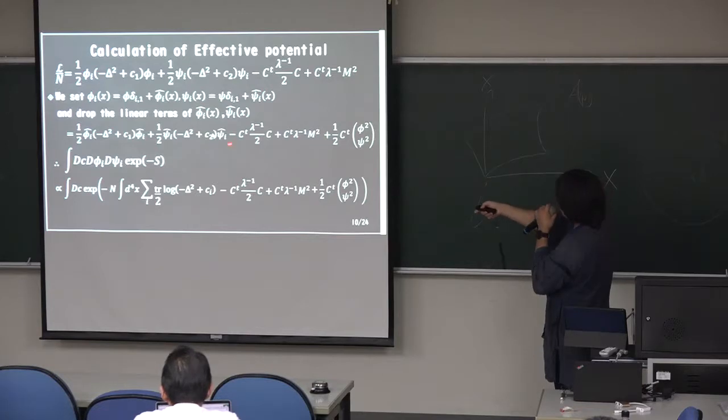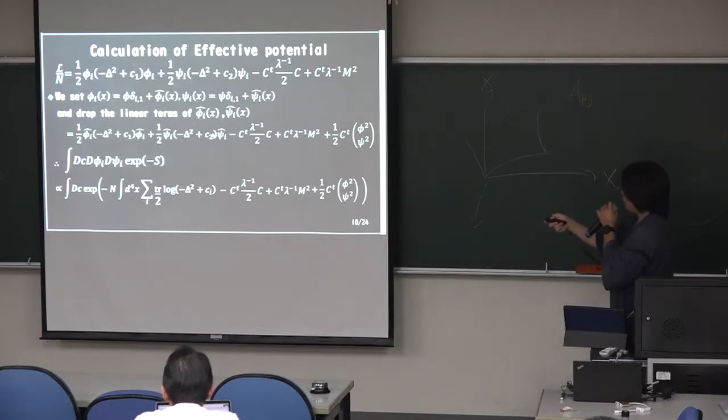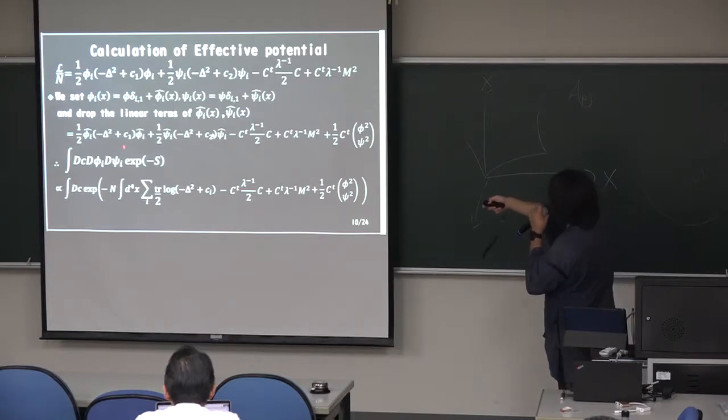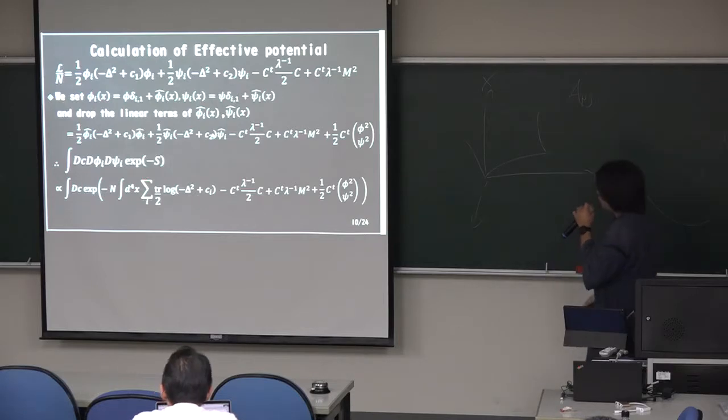And we substitute it, plug in this form, this expression, and the drop is a linear term of fluctuations. Okay, then we get this. All right? And we integrate this fluctuation. So this integration gives the long terms. Maybe like this, to the effective potential.